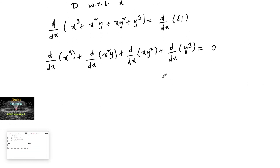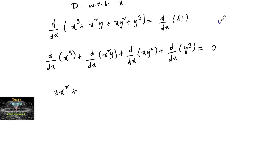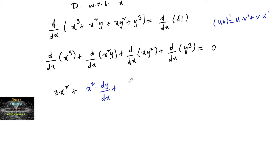The differentiation of x³ is 3x². For x²y, we apply the product rule: uv' = u·v' + v·u'. So d/dx of x²y gives x² times dy/dx, plus y times 2x.